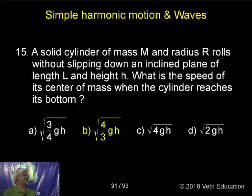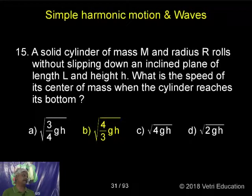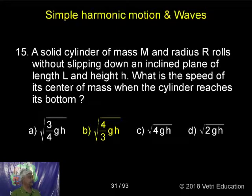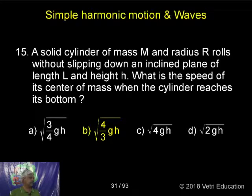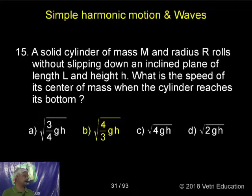A solid cylinder of mass M and radius R rolls without slipping down an inclined plane of length L and height H. What is the speed of its center of mass when the cylinder reaches the bottom?